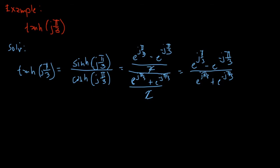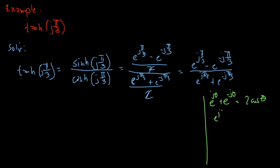From the previous example, we recall that e^(jθ) plus e^(-jθ) is equal to 2·cosine(θ). We also know that e^(jθ) is equal to cosine(θ) plus j·sine(θ), and e^(-jθ) is equal to cosine(θ) minus j·sine(θ).